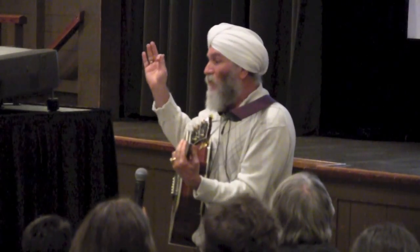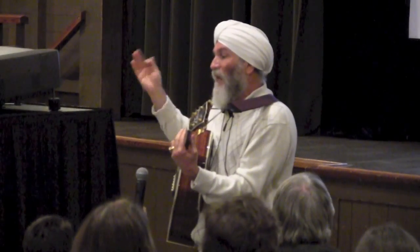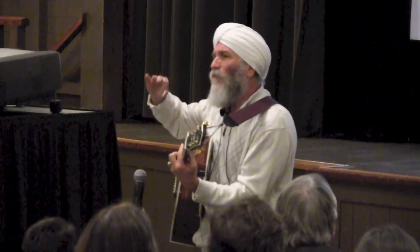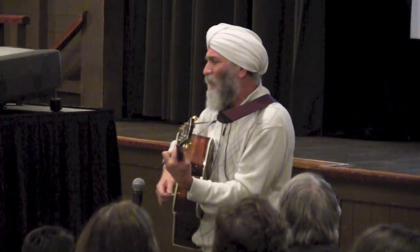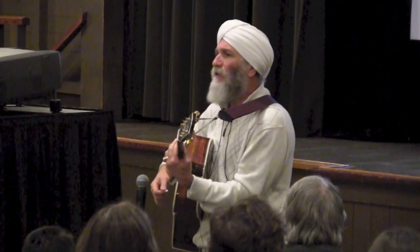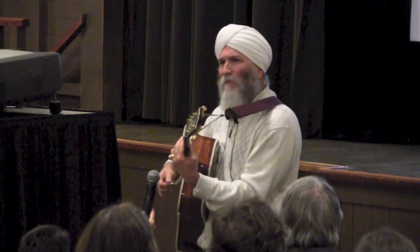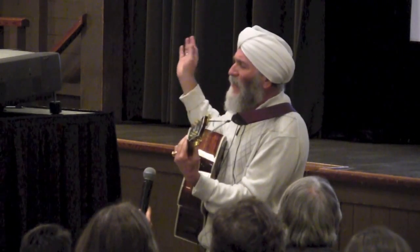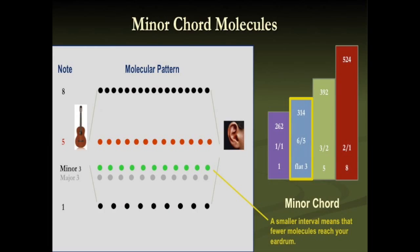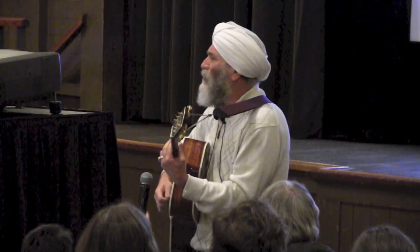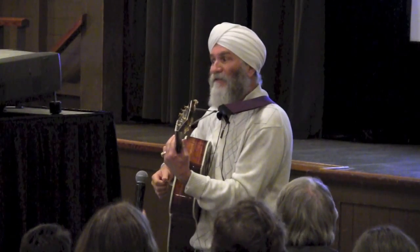Only one of the four tones changes — from five-fourths to six-fifths. The interval between the one and the three is a little bit different in the minor. Wow, the mood shifts! We're going to take a look at the molecular pattern of this minor chord. The only difference between minor and major is between the gray dots and the green dots — just a tiny shift, but a huge mood change. Fascinating.